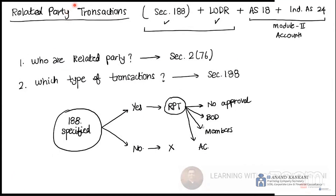So, related party transaction — we need to see two things: one is which related party, and the other one is which transactions. The complicated part is where approval is and where not. First of all, let's see what transaction you are entering into. Is it specified under Section 188? If yes, then that is a related party transaction. Otherwise, the transaction will always be with a related party, but that transaction is not an RPT.